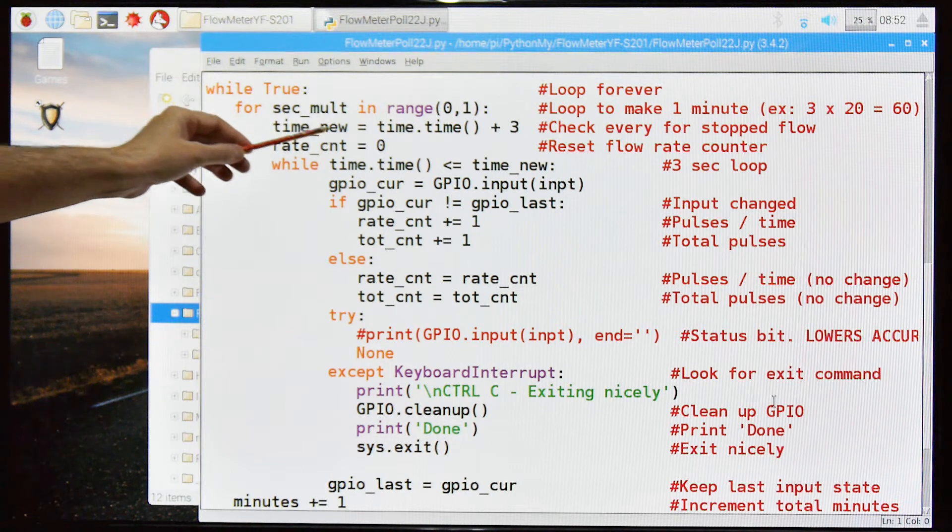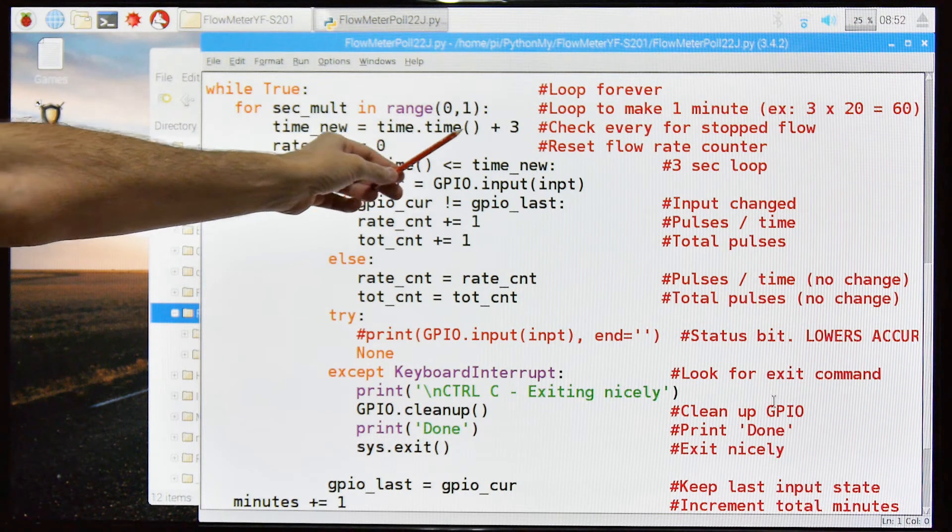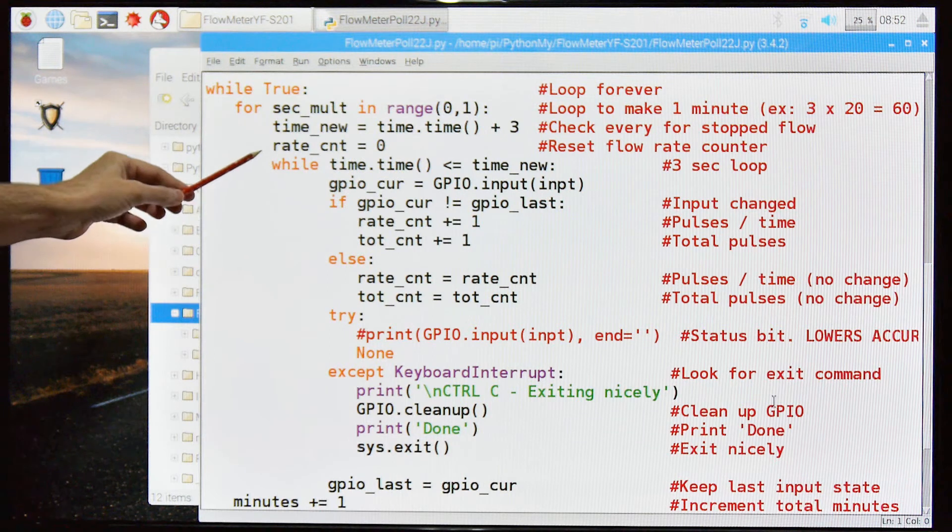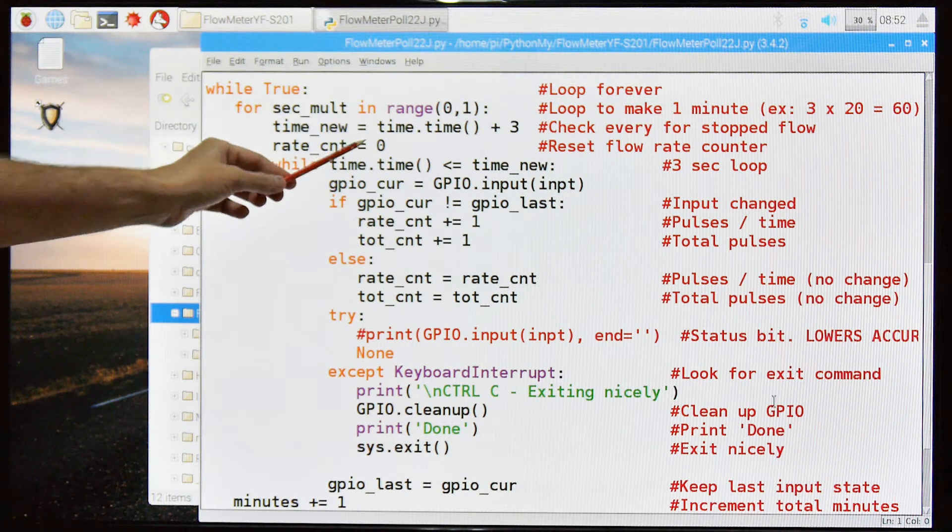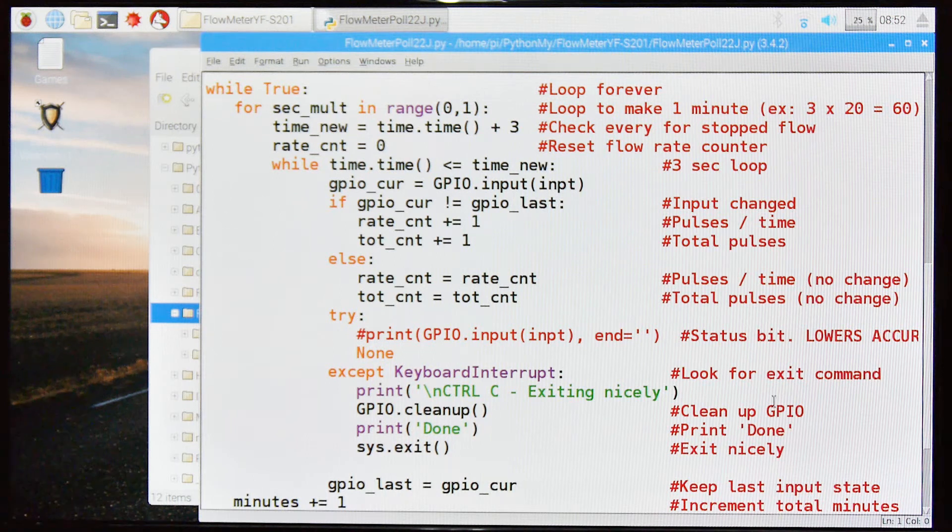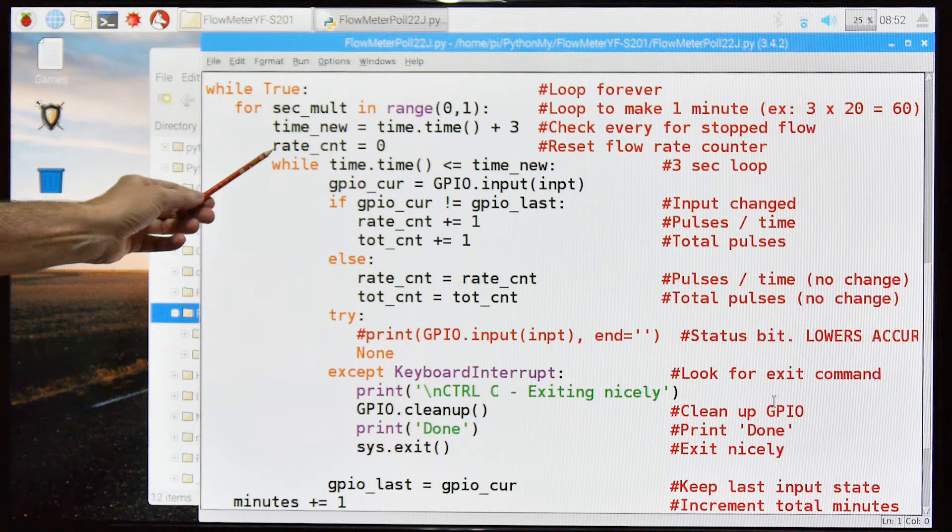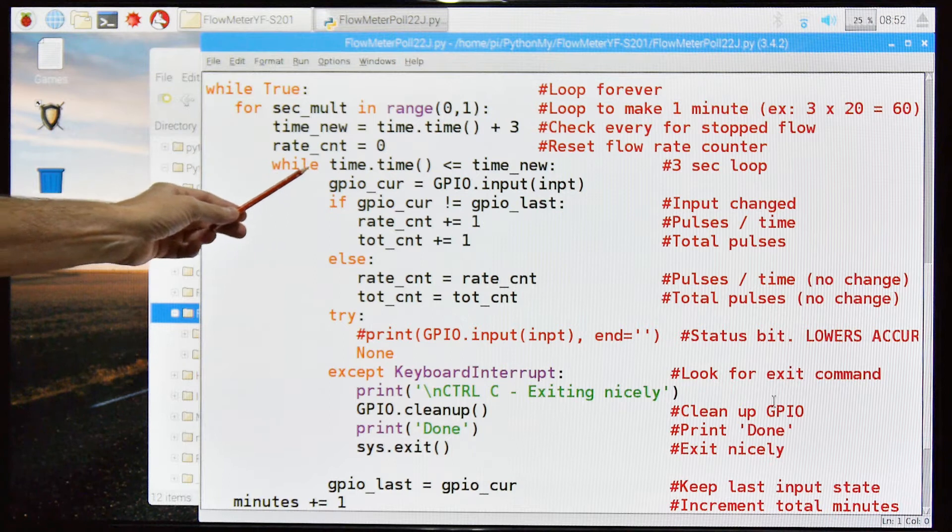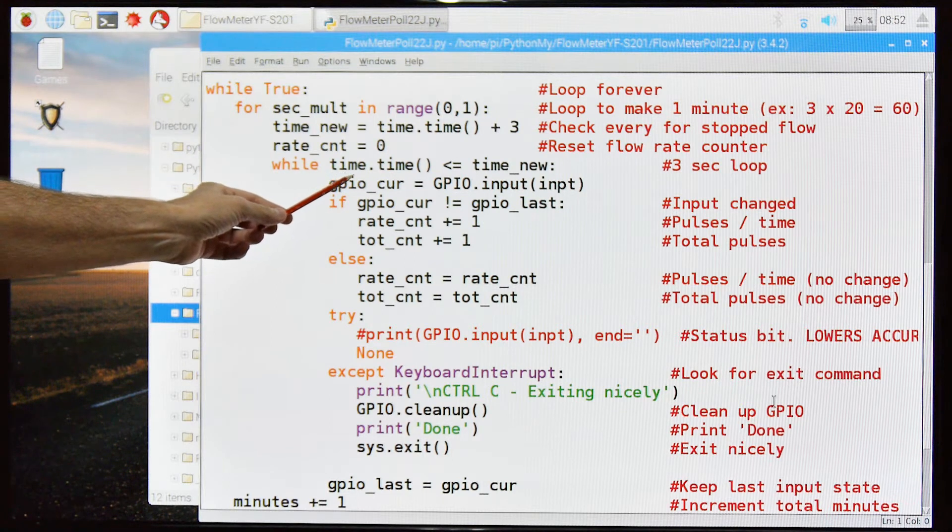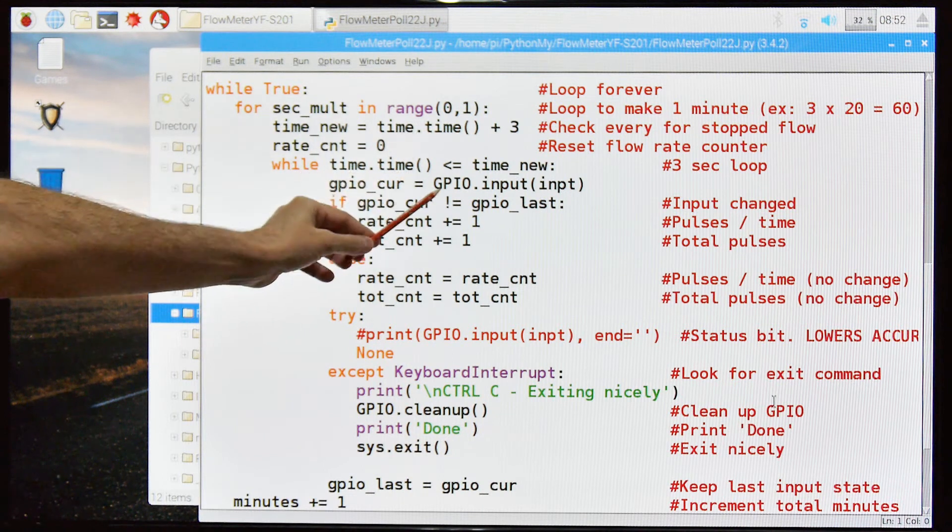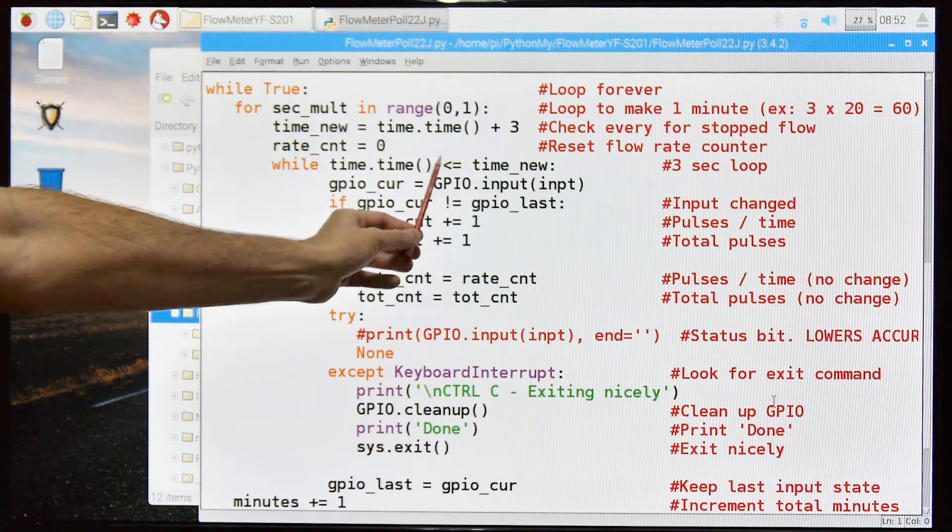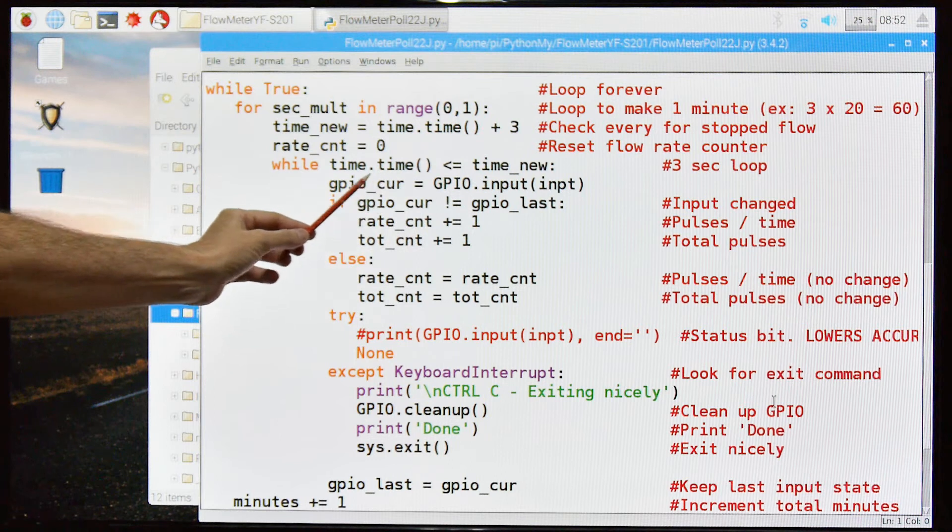But again I'm doing this because in the video we don't want to sit here for a minute between reports. We're going to grab the new time. The new time is the current time plus three seconds. The rate count equals zero and we're just resetting that back to zero. And then we're going to say while the current time is less than the new time and we set the new time up here. So in other words, in three seconds is what I'm saying.